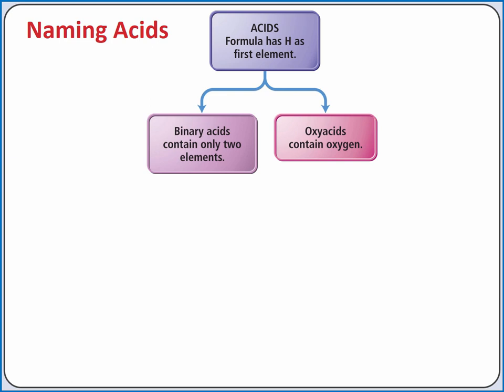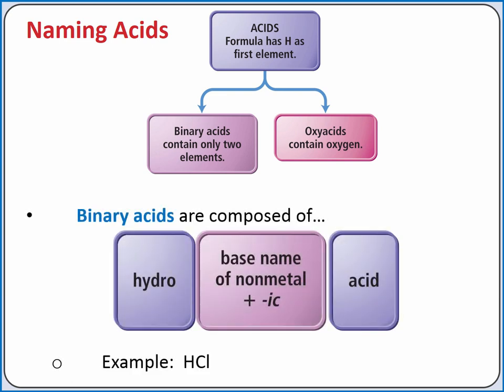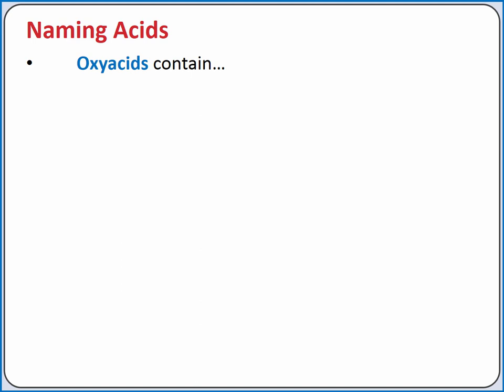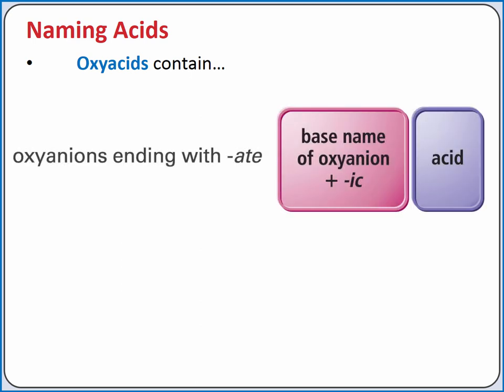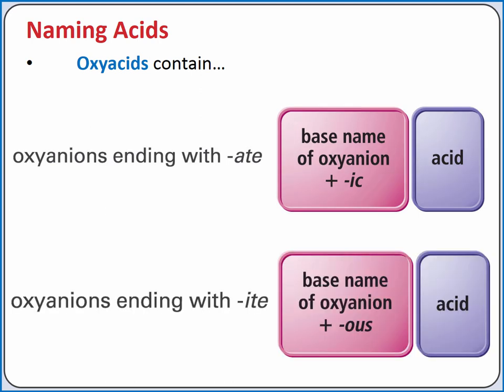We have two types of acids we'll name: binary acids and oxy acids. Binary acids contain only hydrogen and a nonmetal. We name binary acids by adding a hydro prefix to the base name of the nonmetal, changing the ending of the nonmetal to -ic, and adding acid. For example, HCl is hydrochloric acid. Oxy acids contain an oxyanion. If the name of the oxyanion ends in -ate, we change the ending to -ic and add acid — we do not use the prefix hydro. If the name of the oxyanion ends with -ite, we change the ending to -ous and add acid. Again, we do not use the prefix hydro.